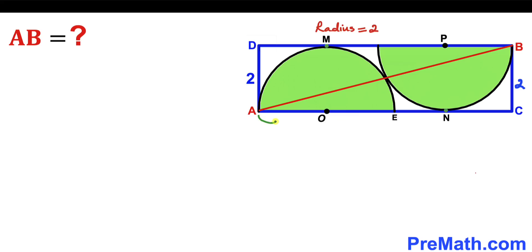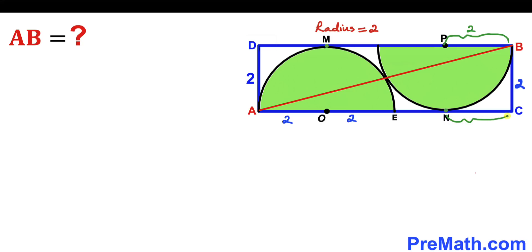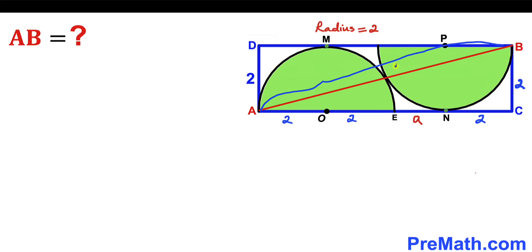So AO is the radius (two units), OE is the radius (two units), PB is the radius (two units), and NC is also two units. Let me label segment EN as lowercase a, and diagonal AB as lowercase b. Our task is to find the value of b.